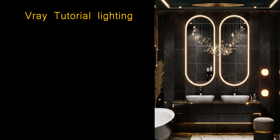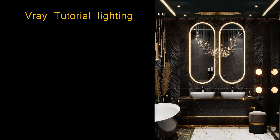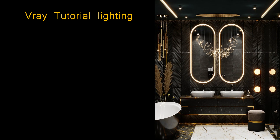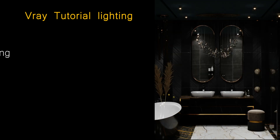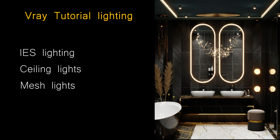In this video we learn how to light a bathroom without environment lights. For this, we use IES lights as the main lights, then use rectangle lights as ceiling lights, and incorporate mesh lights for some of the objects.